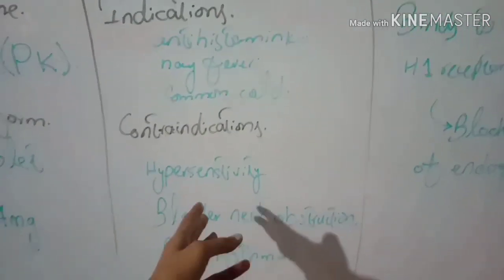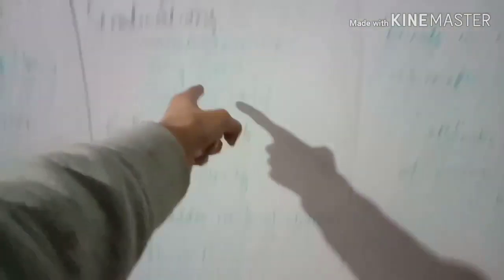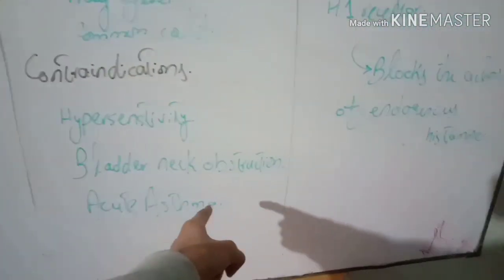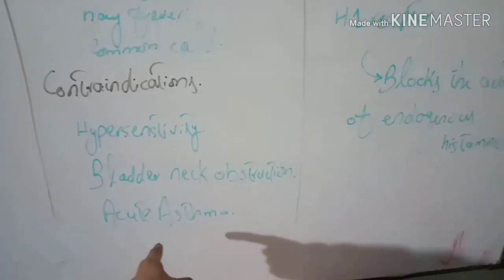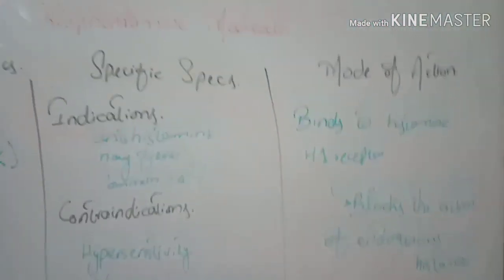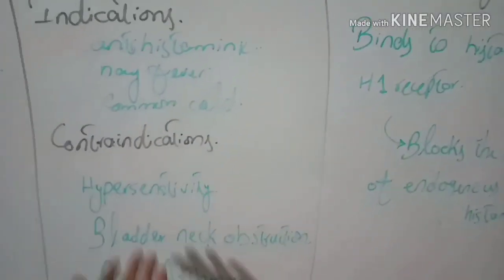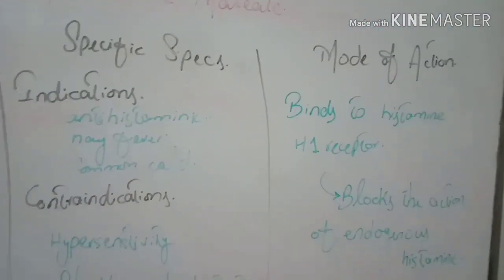What are the contraindications? Hypersensitivity to this drug, bladder neck obstruction, and acute asthma. You can't use chlorpheniramine maleate in these cases. If you are suffering from these disorders as well as allergy, you have to use an alternate drug.